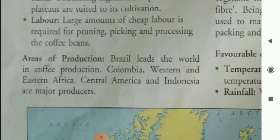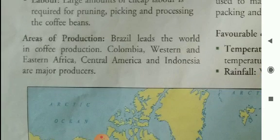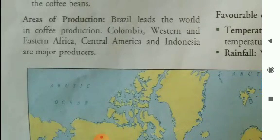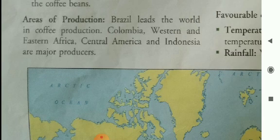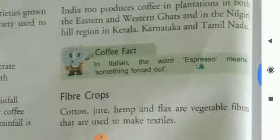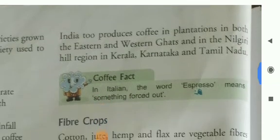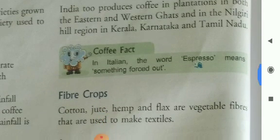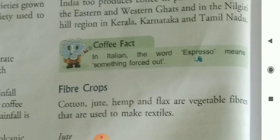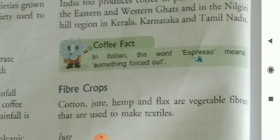Labour: large amounts of cheap labour is required for pruning, picking and processing the coffee beans. Areas of production: Brazil leads the world in coffee production. Colombia, Western and Eastern Africa, Central America and Indonesia are major producers. India too produces coffee in plantations in both the Eastern and Western Ghats and in the Maligiri Hill region in Kerala, Karnataka and Tamil Nadu.